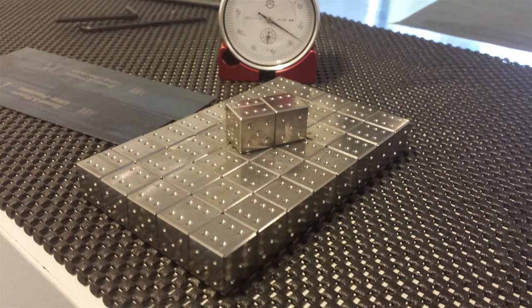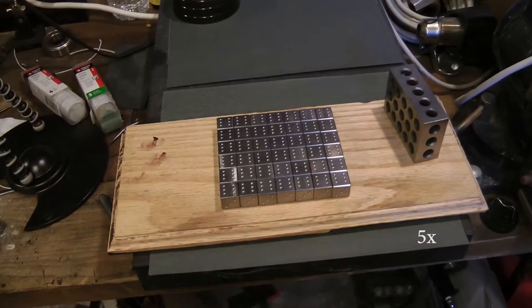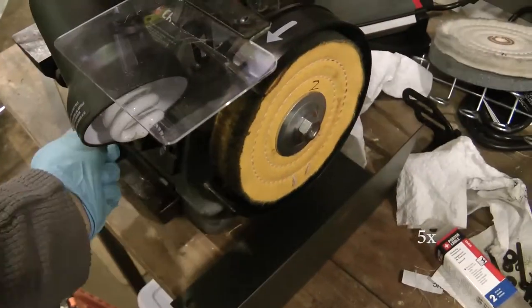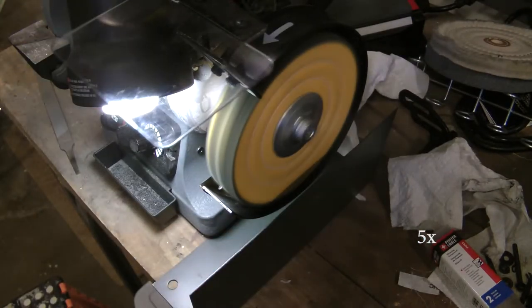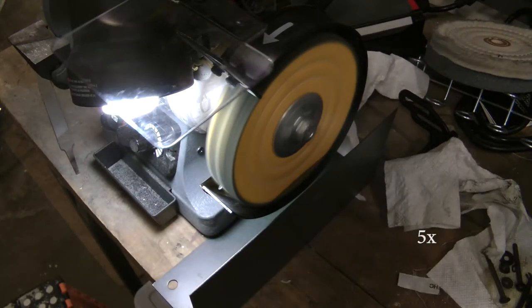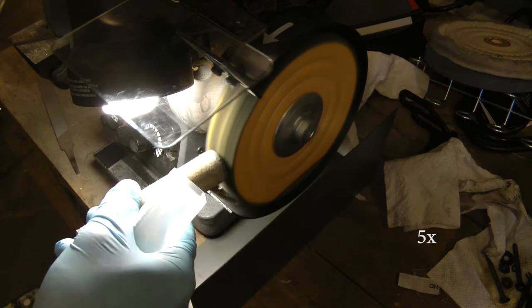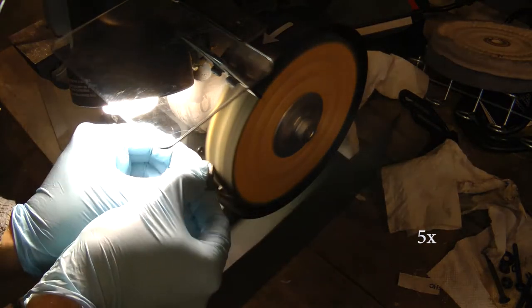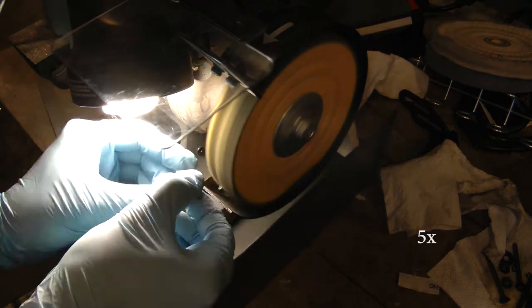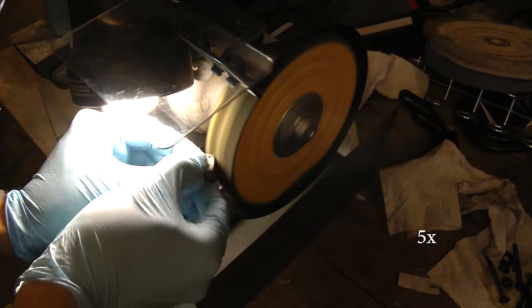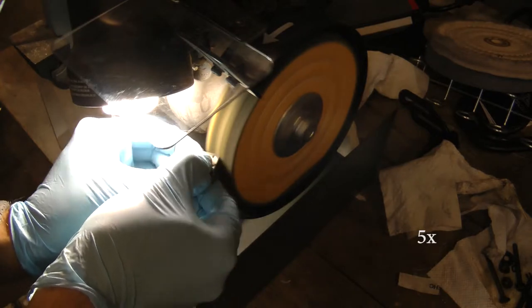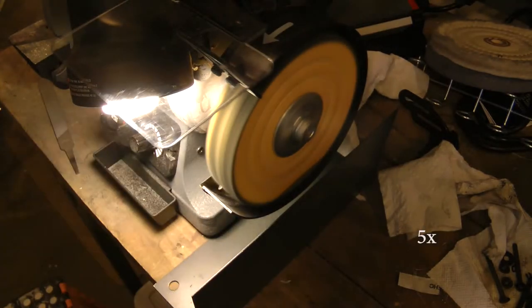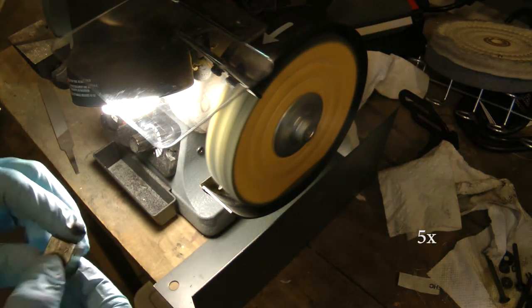After we have all the pips drilled, we move on to the next step, which is breaking out the polishing wheel. I'm using number two polish to just polish up the edges because we won't be doing anything else to the edges and corners. So I want to get a nice polish on them.